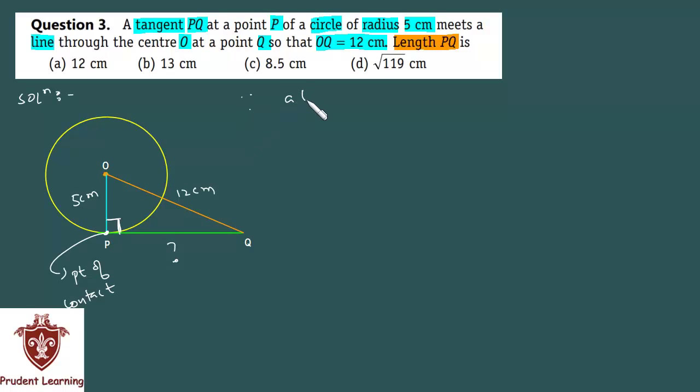Since a tangent to a circle is perpendicular to the radius at the point of contact, the triangle OPQ that is formed - if the radius and tangent are perpendicular - will be a right-angled triangle. You can also write: which implies angle OPQ is equal to 90 degrees, that is, triangle OPQ is a right-angled triangle.